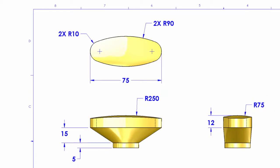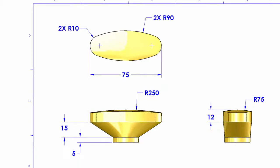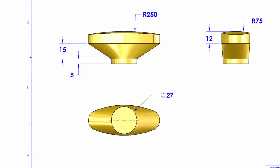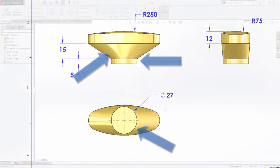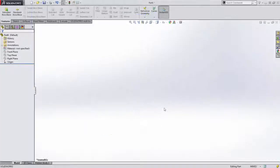The area that you can really approach several ways is going to be these bottom two features — first this cylindrical boss that comes out of the bottom, and then this loft or blend feature that connects them together. So let's dive into SolidWorks and start with that top profile.